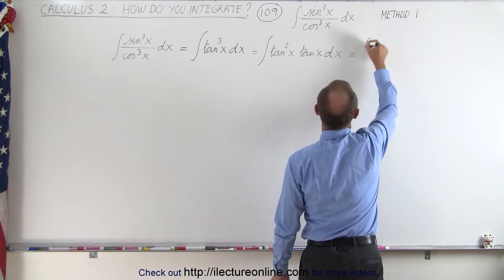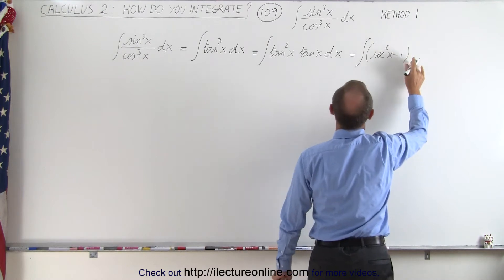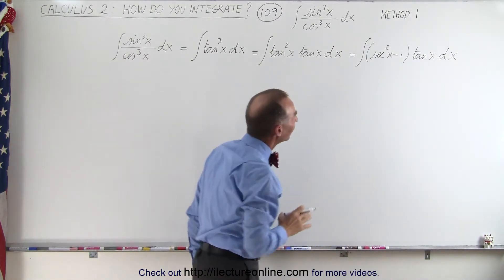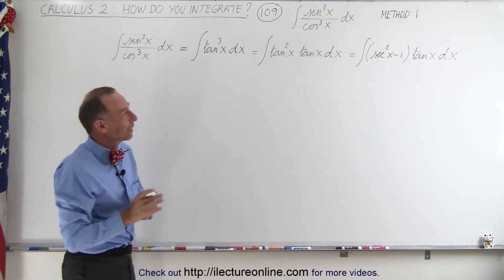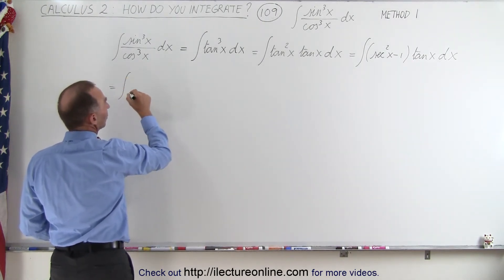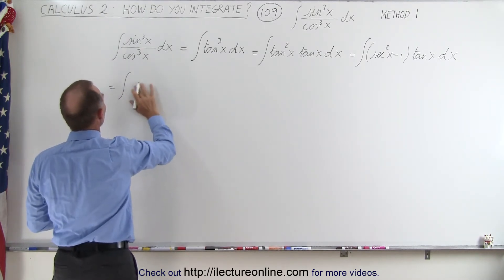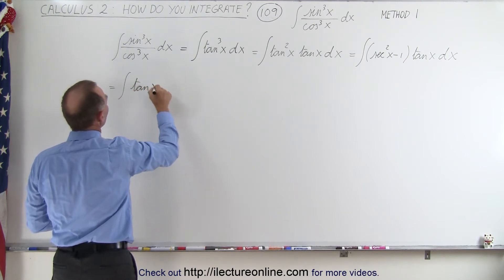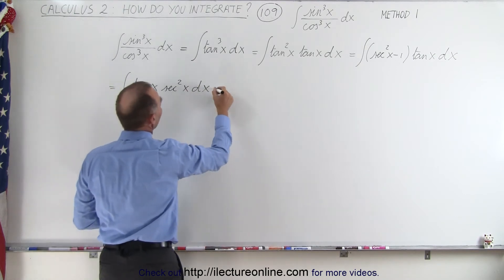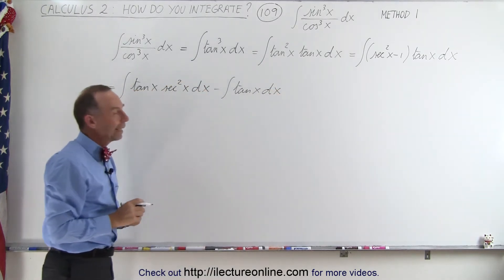So this can now be written as the integral of (secant squared of x minus 1) times tangent of x dx. We then split this into two separate integrals. The first integral is the integral of tangent of x times secant squared of x dx — reversing the order — and then minus the integral of tangent of x dx for the second integral.